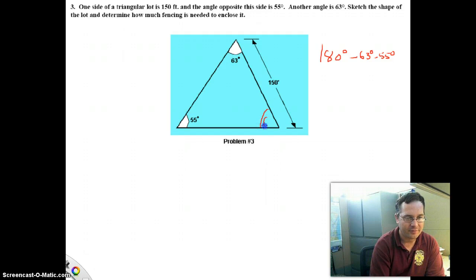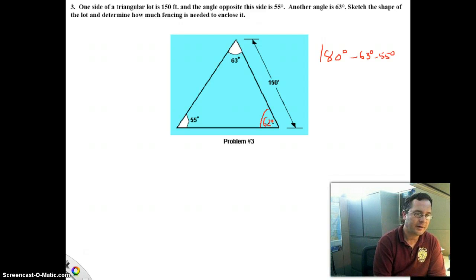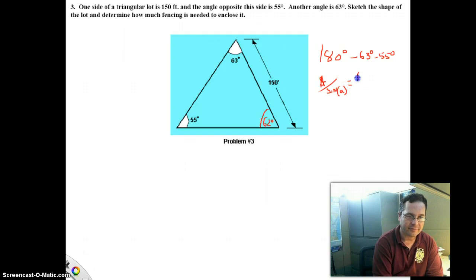So this angle is 62 degrees. Now to solve the remainder of this problem, you need to use the law of sines. And just as a refresher, the law of sines says that side A divided by sine of angle A equals side B divided by sine of angle B equals side C divided by sine of angle C. Essentially what it says is that the length of any side is proportional to the sine of the angle opposite that side.